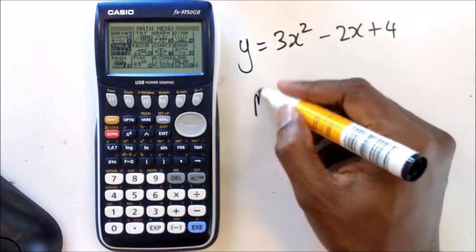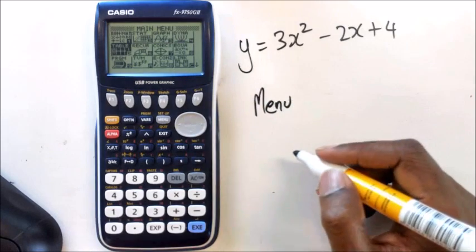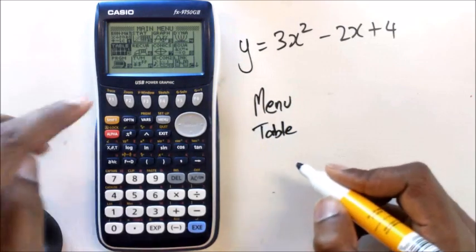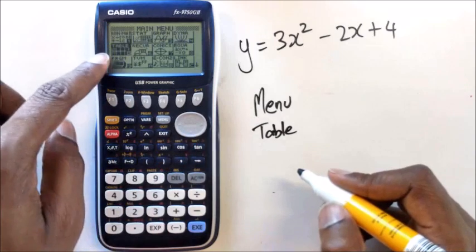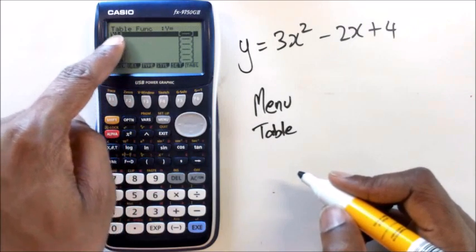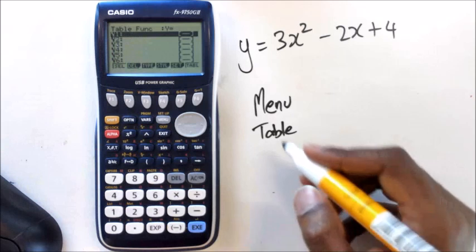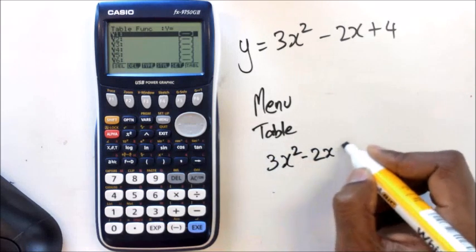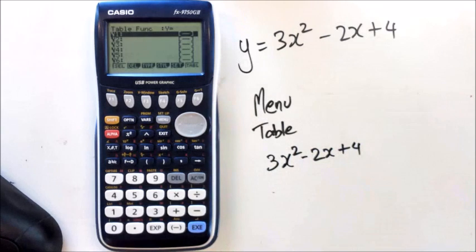What you want to do is press menu and find the thing that says table, the option that says table. Once you press that, it's going to ask you something like table function. At this point, you want to enter 3x squared minus 2x plus 4, so enter the equation itself.